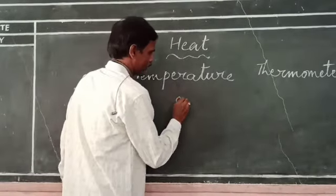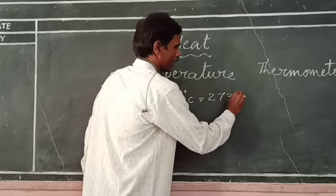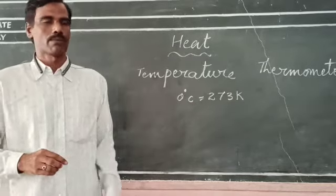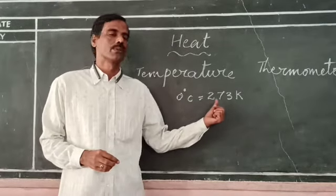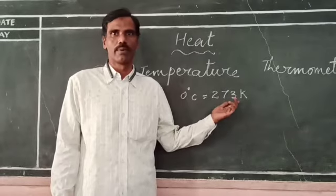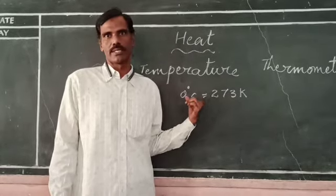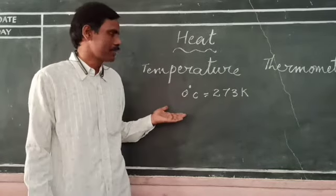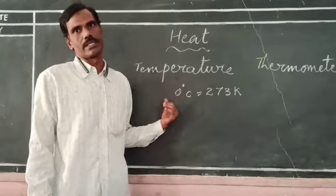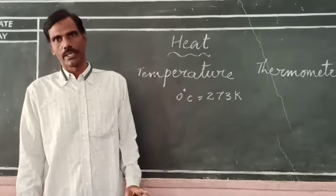Zero degree centigrade is equal to 273 Kelvin. This relation can be useful for converting one system of unit to another. If you want to convert degree Celsius to Kelvin, add 273 to the degree Celsius. If you want to convert Kelvin to degree Celsius, subtract 273 from Kelvin.